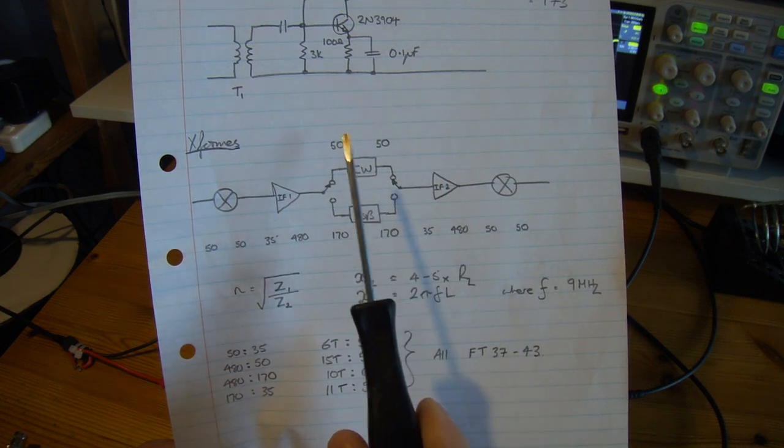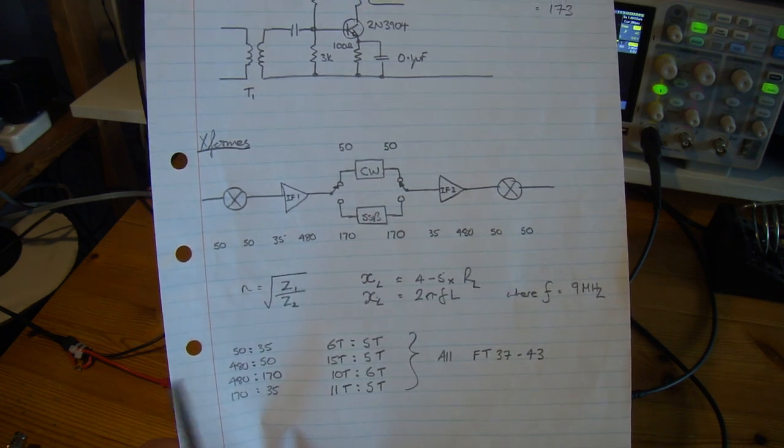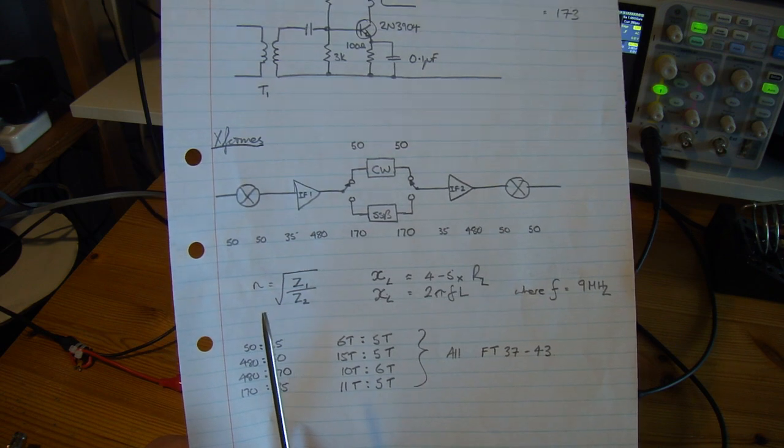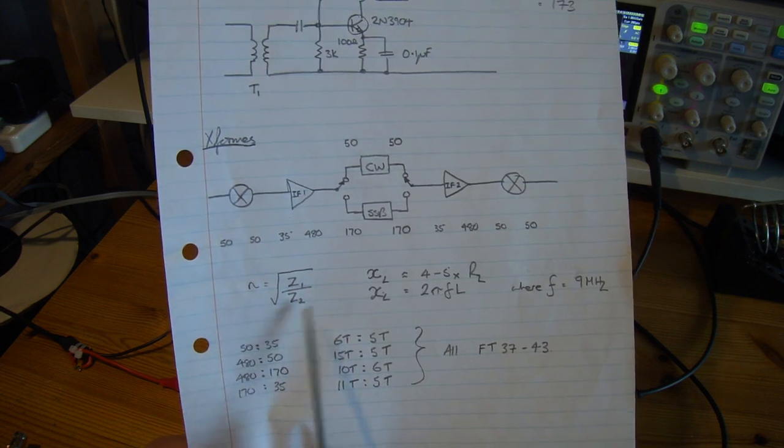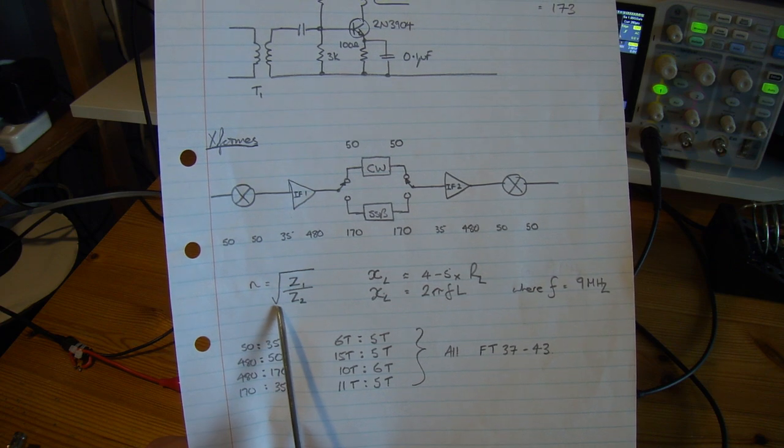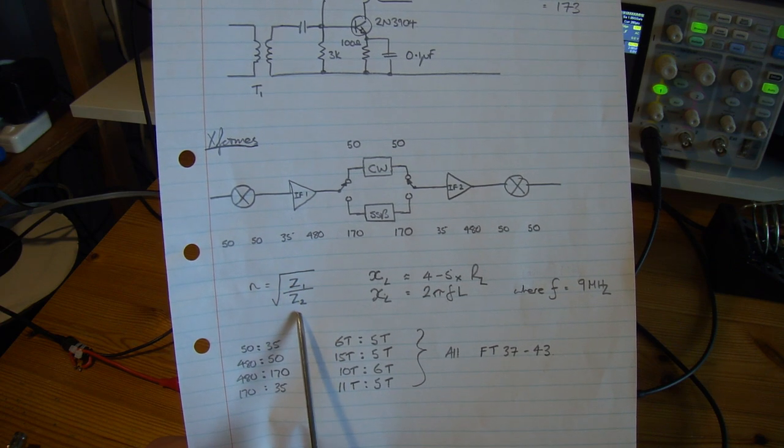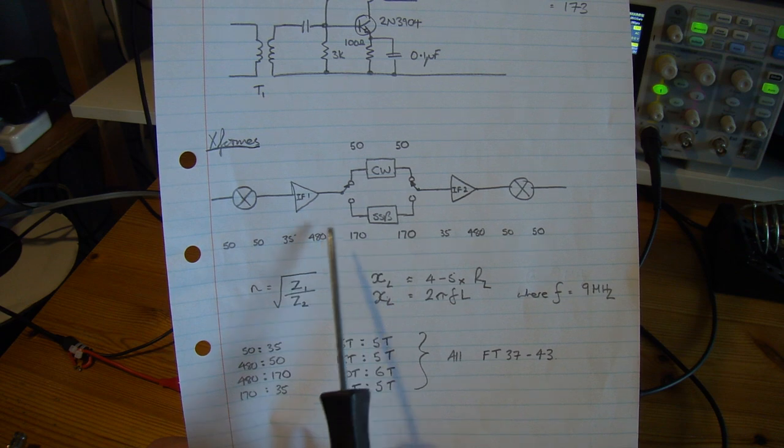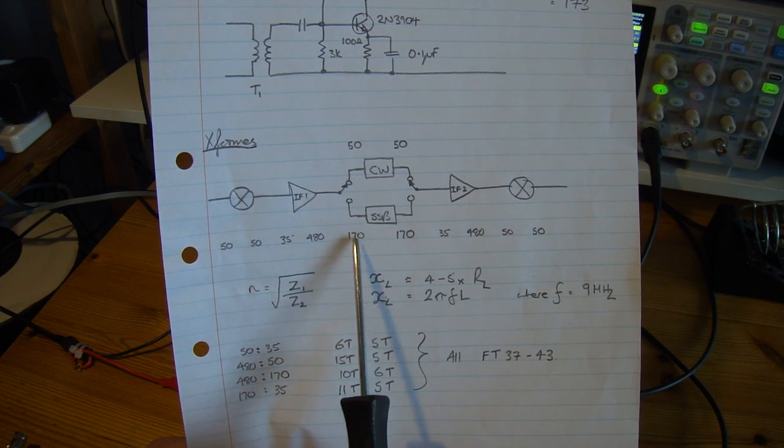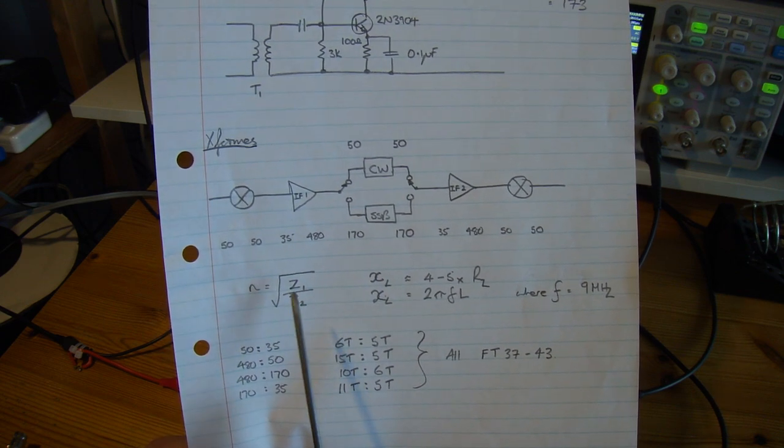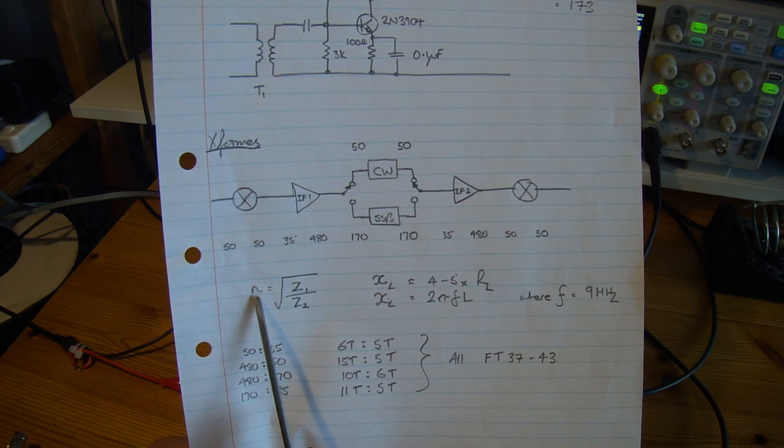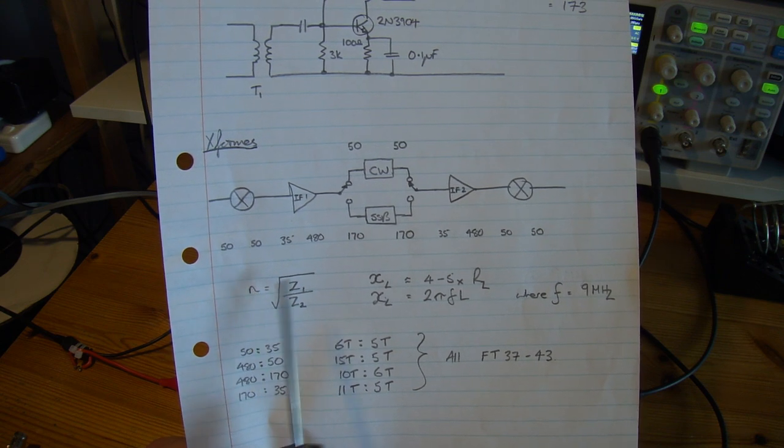I won't go into formulas here, but we know that our turns ratio is the square root of z1 over z2, or in this particular case just the resistances 480 over 170 as an example, and that becomes up with our n.